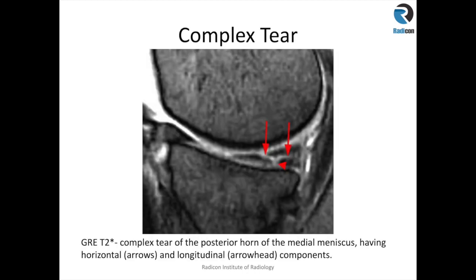Here is an example of an oblique parrot beak tear, and you can see the signal change which is obliquely oriented. Some people call it an oblique tear, but it resembles a parrot beak, therefore some people rightly call it a parrot beak tear.